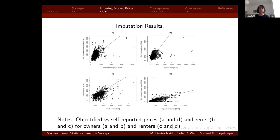Tenancy status is one of the prime explanatory predictors, as renters tend to underestimate the value of their home. Since this correlates with the household's wealth, those at the top of the net wealth distribution are more likely to over-report house values. Length of occupancy also plays a role — the further into the past the purchase or lease is, the less precise the estimate. Geographically, overestimation is less common in large urban areas and happens more in rural areas.